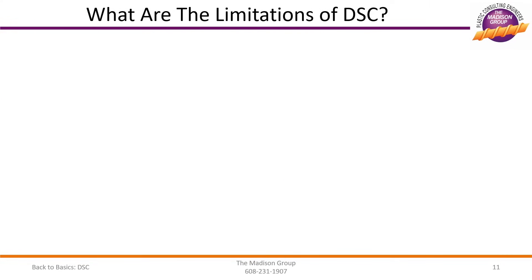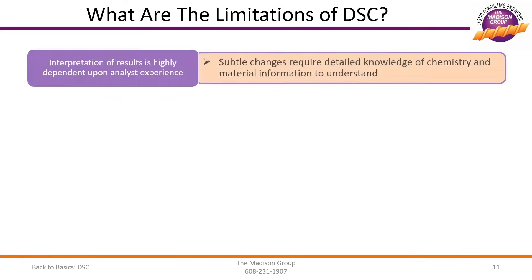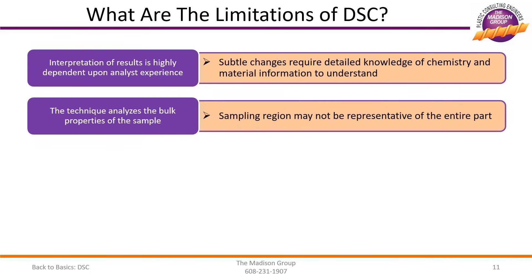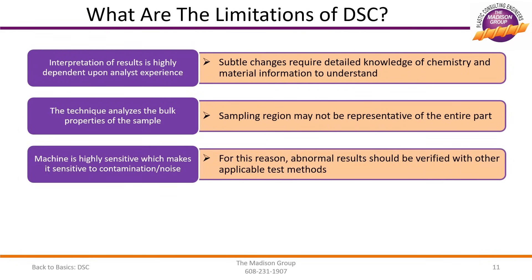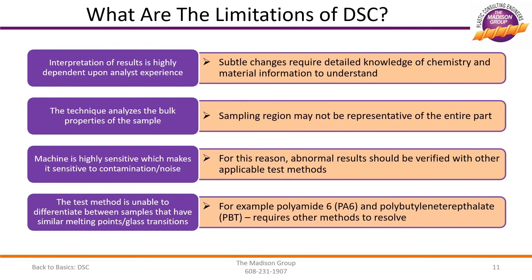While DSC is a very powerful technique to identify and diagnose issues with polymeric components, there are some limitations that should be known. First, the interpretation is highly dependent on analyst experience, which can make interpretation difficult, and caution should be used to not over-interpret the data. Additionally, the test method analyzes the bulk properties of a specimen that is no bigger than a grain of rice, so the sampling region may not be representative of the entire part. The machine is highly sensitive to contamination, which can lead to abnormal results that should be verified with other applicable tests. Further, this technique has difficulty differentiating between materials with similar transitions — for example, polyamide-6 and polybutylene terephthalate cannot be easily distinguished due to their similar melting points.